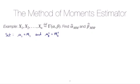In class I promised another example of finding a method of moments estimator and so this video is meant to do that. So we've got a random sample from a gamma distribution with parameters alpha and beta and the goal is to find the method of moments estimators for both alpha and for beta.